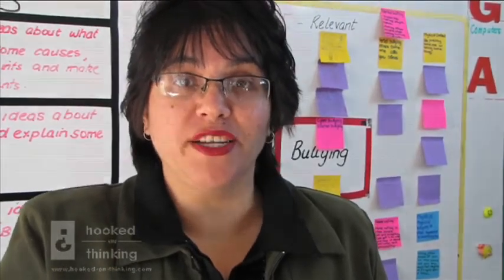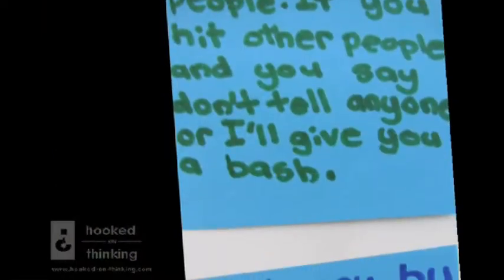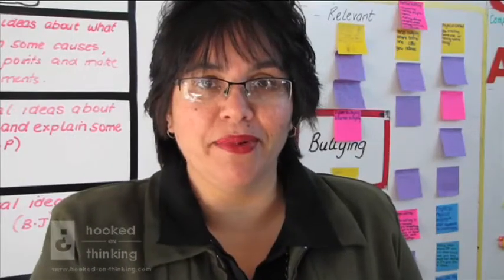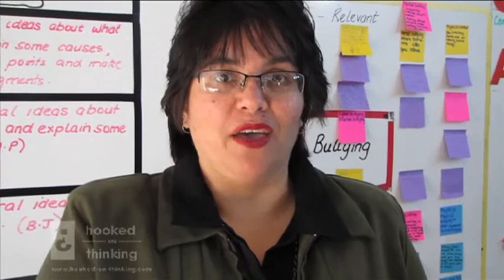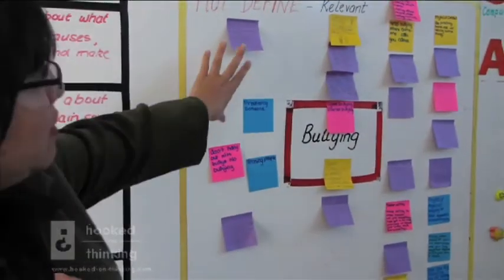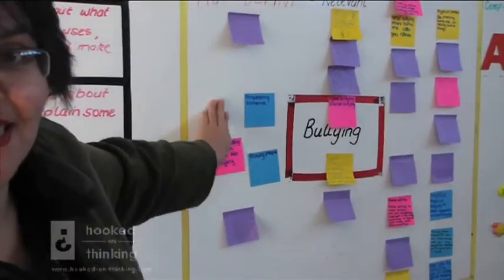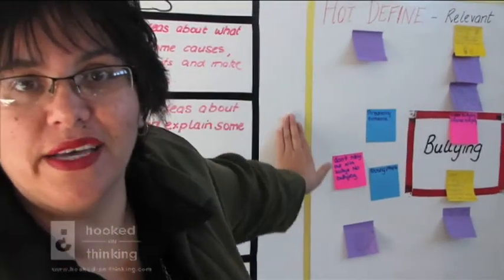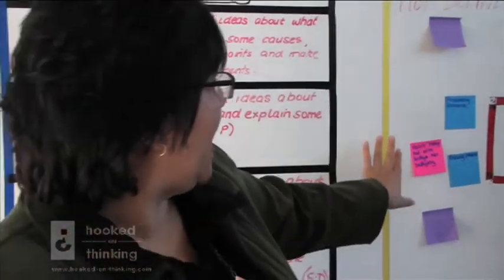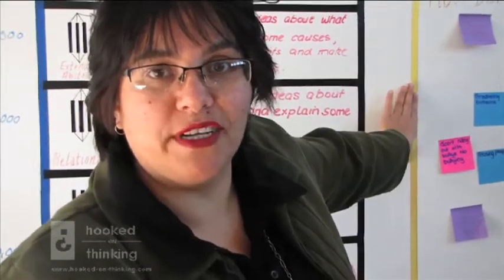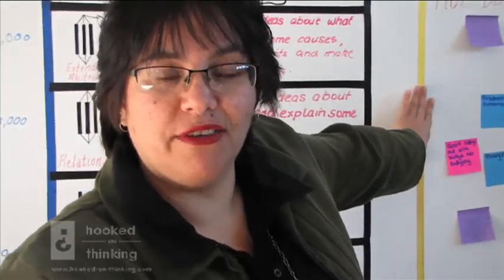The children write all their ideas down, they have a discussion first and then they come up and place their ideas on the Define map. They also indicate whether they think it's a relevant idea inside the square or irrelevant outside the square. Some children have them sort of borderline — sometimes they're not sure if it is relevant or irrelevant.